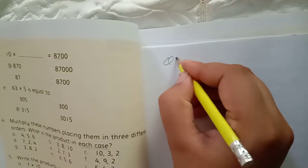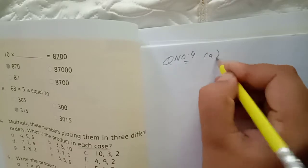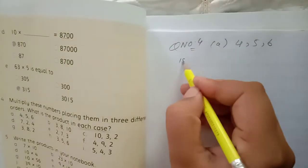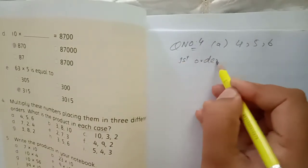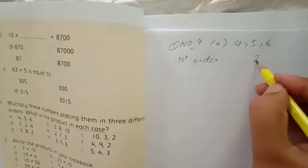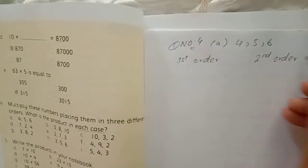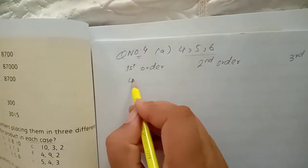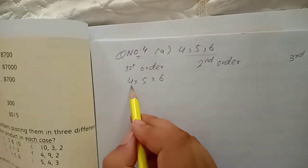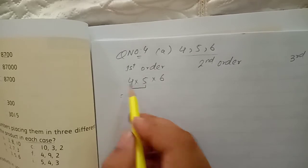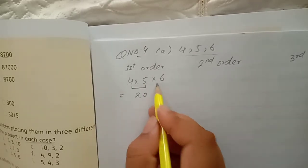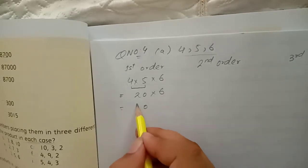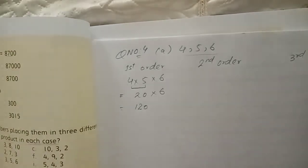Question number four, part A — the numbers are 4, 5, and 6. Write headings: first order, second order, third order. In the first order, write as given: 4 × 5 × 6. First multiply the two numbers: 5 fours are 20. Then 20 × 6 — six 2s are 12 — so that is 120. In the first order our answer is 120.